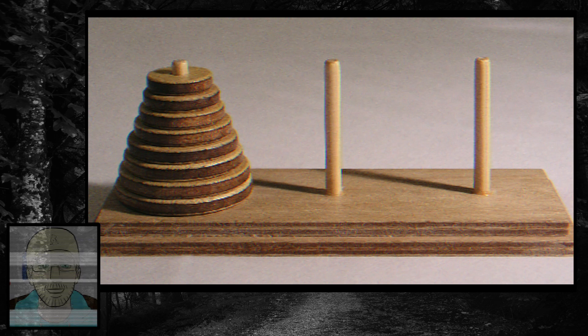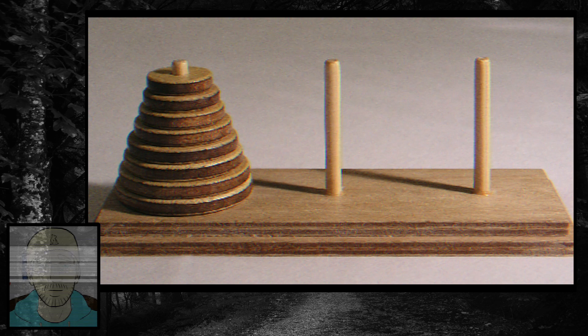Now how about two rings? The optimized moves would be moving ring 1 or the smaller ring to the middle post. Then move ring 2 or the larger ring to the third post. And finally, moving ring 1 to the third post. Only three moves are needed.